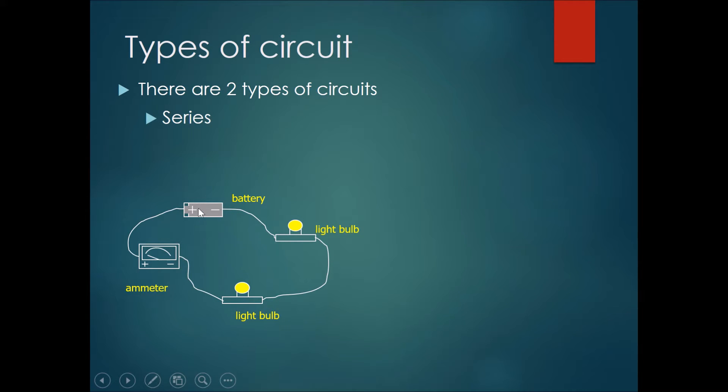You can see the battery here. The current will go through, going through the ammeter, then it will go to a light bulb, then to a second light bulb, then back to the battery. It's a little bit like a train going along a single line.